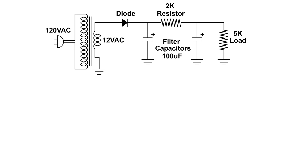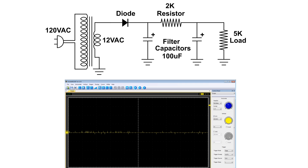Here I have added another 100 microfarad capacitor and a resistor between the two — this is a classic pi filter configuration. Let's take a look at what it looks like. I'll raise the line so you can see it, and it is flat. We now have DC. Those little bitty spikes are from a nearby radio station, but we do now have DC going through that 5k ohm load resistor.